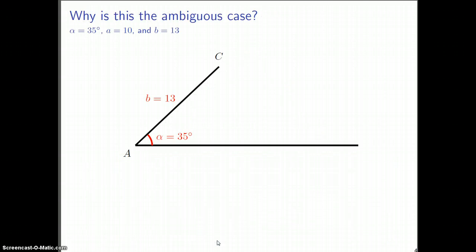Here's what goes wrong in a sense, why this is called the ambiguous case. Here we've labeled the angle alpha, 35 degrees, and one side is length 13, that's b, and then the other side that comes off of here. This was length 10, but because the picture's a little deceptive, I haven't labeled that side. We don't know what the angle is right here at C, so this angle gamma is not known.